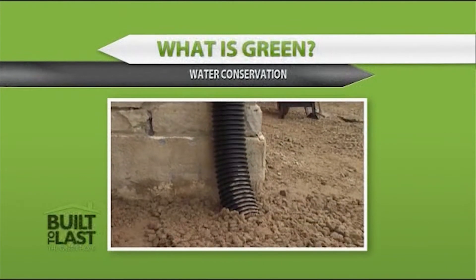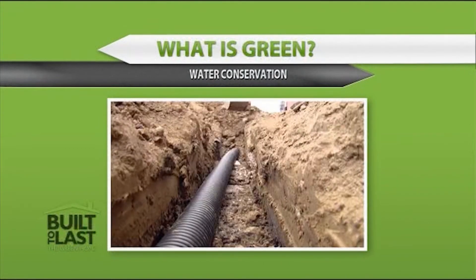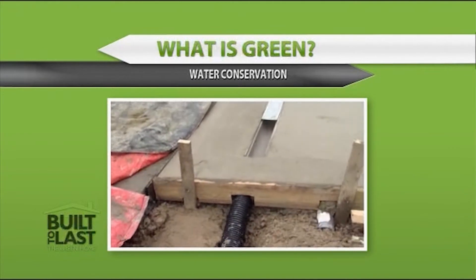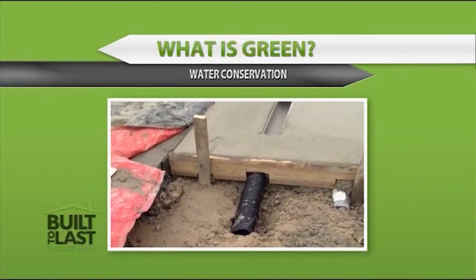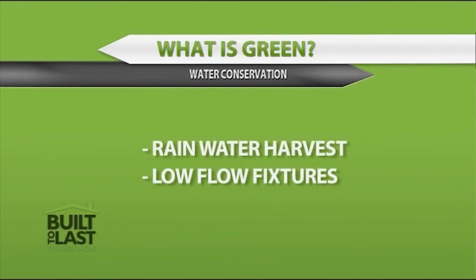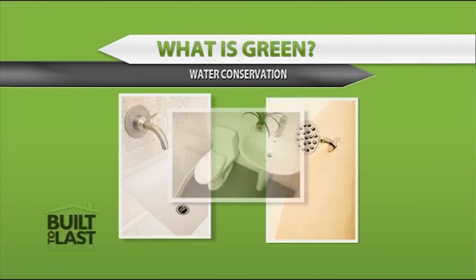For water conservation, we will be incorporating a rainwater harvesting system that takes the intent of reducing potable water demand for irrigation even further. Besides reducing water use on the exterior of the home, we will also be using low-flow faucets, toilets, and shower heads in the bathrooms.